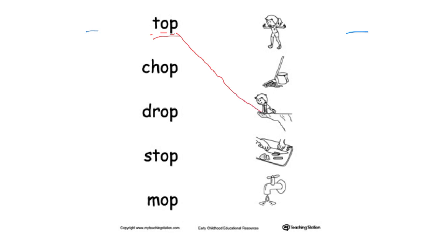Now let's read the second word: chop, chop, chop. Which picture matches the word chop? Definitely this one. Chop, chop, chop the vegetables.